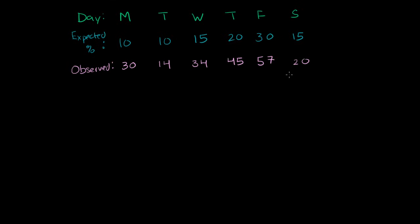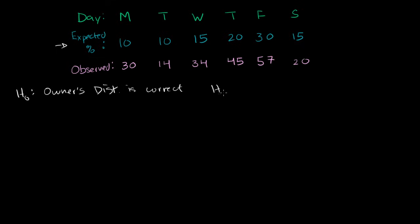This is what I get for my observed data. To figure out whether to accept or reject his hypothesis, I'm going to do a hypothesis test. The null hypothesis is that the owner's distribution is correct. The alternative hypothesis is that it is not correct — that it is not a reliable distribution and I should reject it. I want to do this with a significance level of 5%.